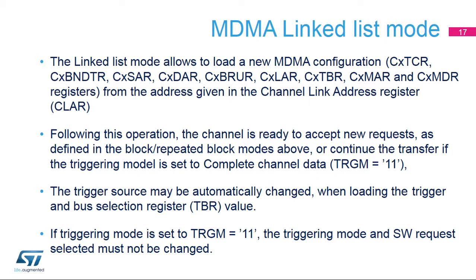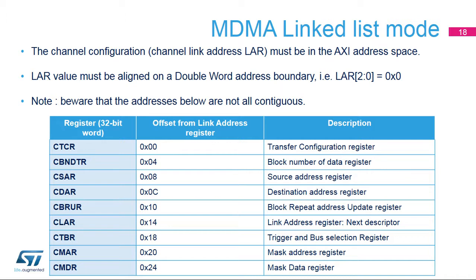The linked list mode allows loading of a new MDMA configuration from the address given in the CX-LAR register. This address must address a memory mapped on the AXI system bus. Following this operation, the channel is ready to accept new requests as defined in the block and repeated block modes, or continue the transfer if TRGM[1:0] equals 11. The trigger source can be automatically changed when loading the CX-TBR value. The TRGM and SWRM values must not be changed when TRGM[1:0] equals 11. The channel link address LAR must be in the AXI address space, aligned on a double-word address boundary, such that LAR[2:0] equals 0x0.